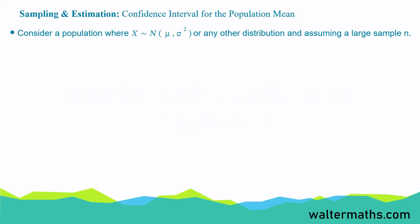Now, I would want you to consider a population where the random variable x follows a normal distribution of mean mu and variance sigma squared. So, if the population is normal, the sample mean will also have a normal distribution of mean mu and variance sigma squared over n.